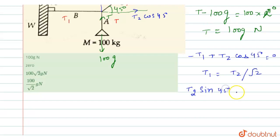sine 45 degrees minus T equals 0. From here we can find the value of T, which equals T2 divided by root 2.